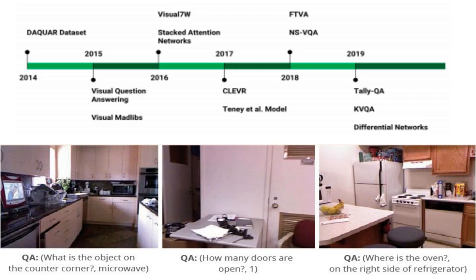The bottom images show an example of what the VQA would do: it analyzes the image, analyzes the question, and based on both provides a response. For instance, 'how many doors are open?' shows two doors but only one is open — so it answers one. Or 'where's the oven?' and it says on the right side of the refrigerator. That's basically what we want the VQA model to do.